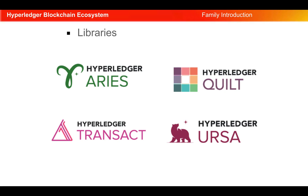In the libraries category, we have Hyperledger Aries, which provides a shared, reusable, interoperable toolkit designed for initiatives and solutions focusing on creating, transmitting, and storing verifiable digital credentials. Hyperledger Quilt is a Java implementation of the Interledger Protocol enabling payments across any payment network. Hyperledger Transact aims to reduce the development effort in writing distributed ledger software by providing a standard interface for executing smart contracts. Hyperledger Ursa is a shared cryptographic library that enables implementations to avoid duplicating cryptographic work, thus increasing security.